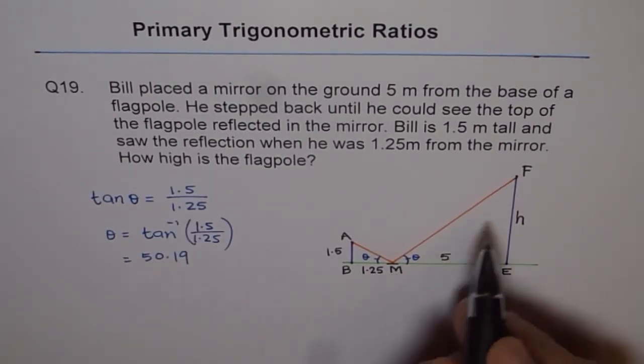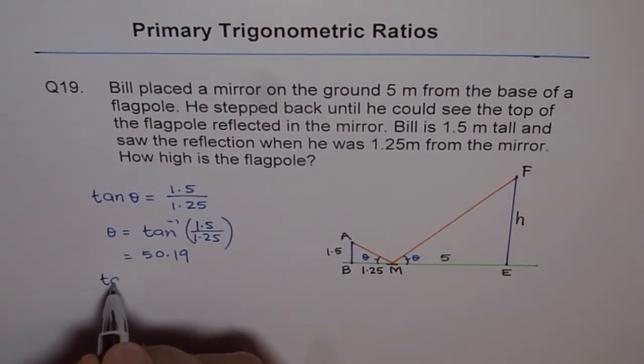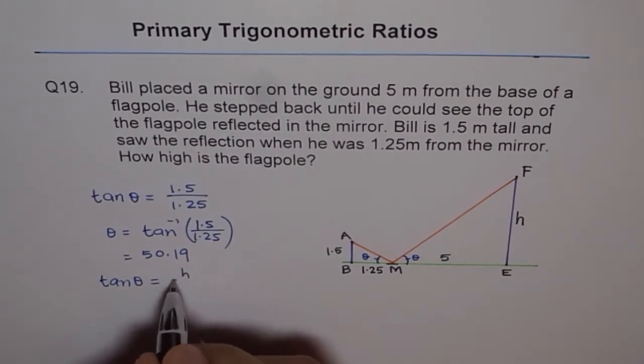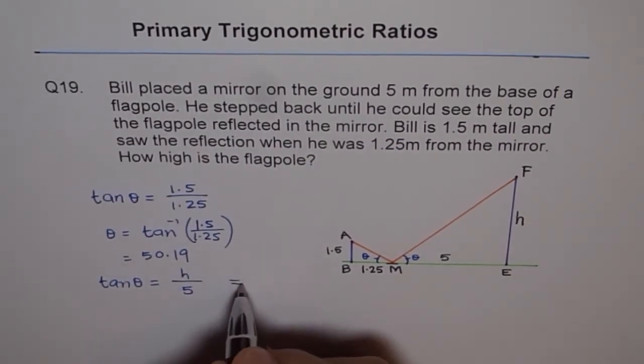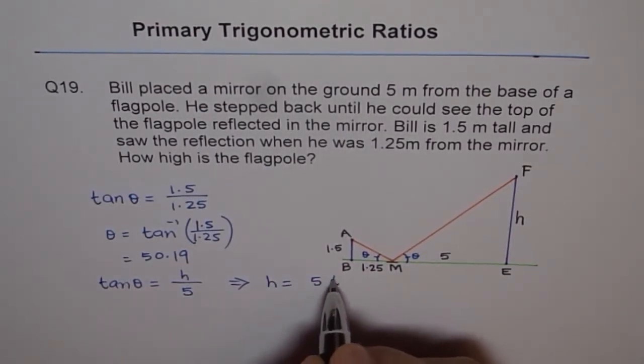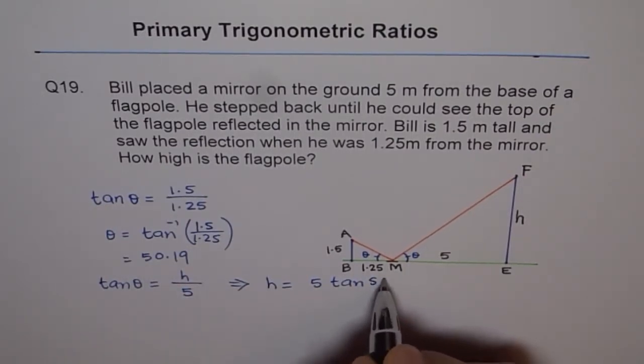In triangle FME, tan theta equals h over 5. So height h equals 5 times tan theta, which is 5 times tan of 50.19 degrees.